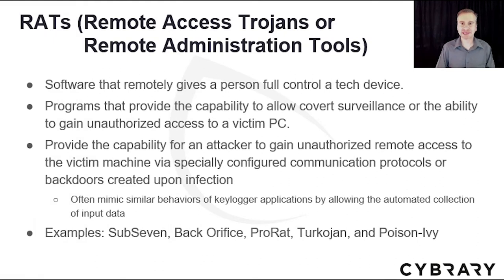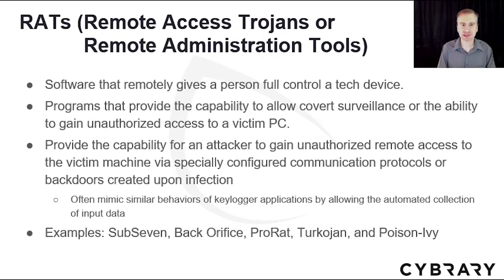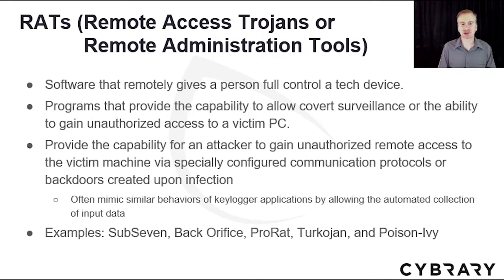A remote access Trojan, or remote administration tool (RAT), is software that remotely gives a person full control of a technology device. RATs are also known as programs that provide covert surveillance or the ability to gain unauthorized access to a victim's PC. Examples include Sub7, Back Orifice, ProRat, Turkojan, and Poison Ivy.